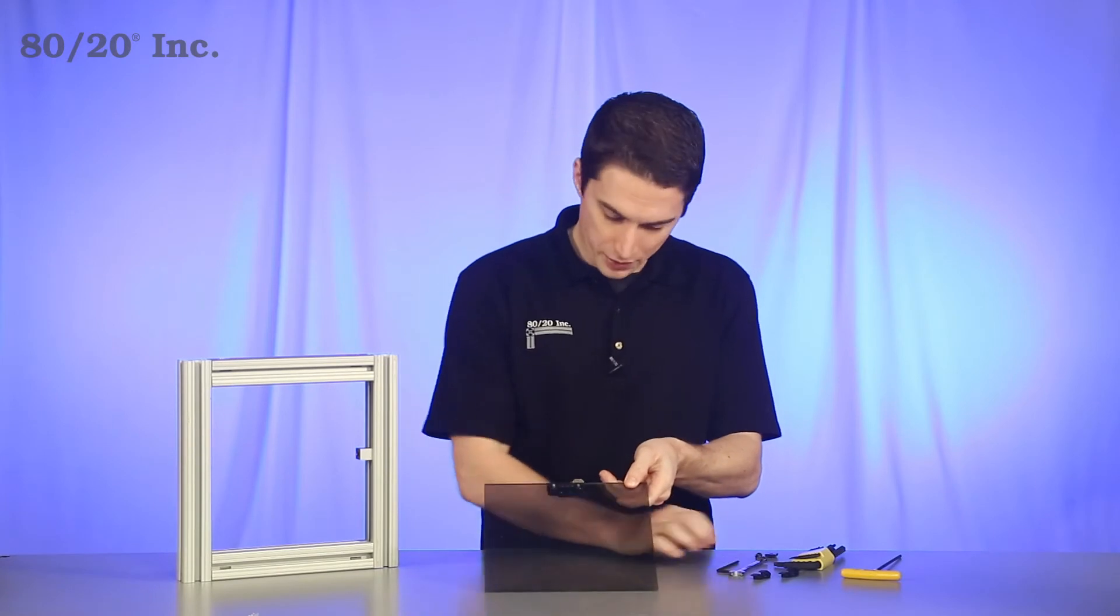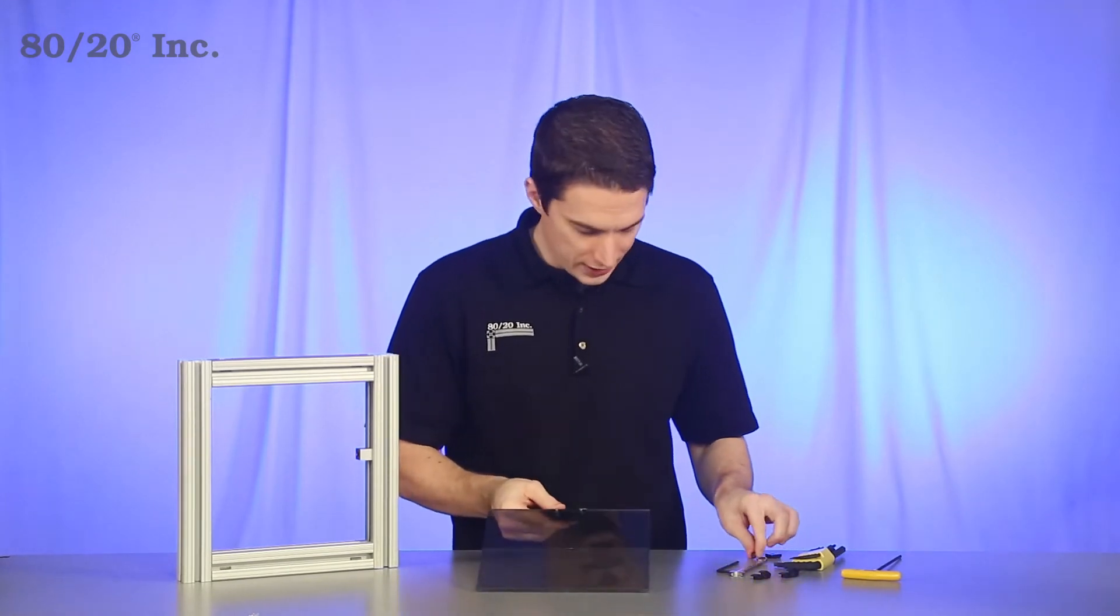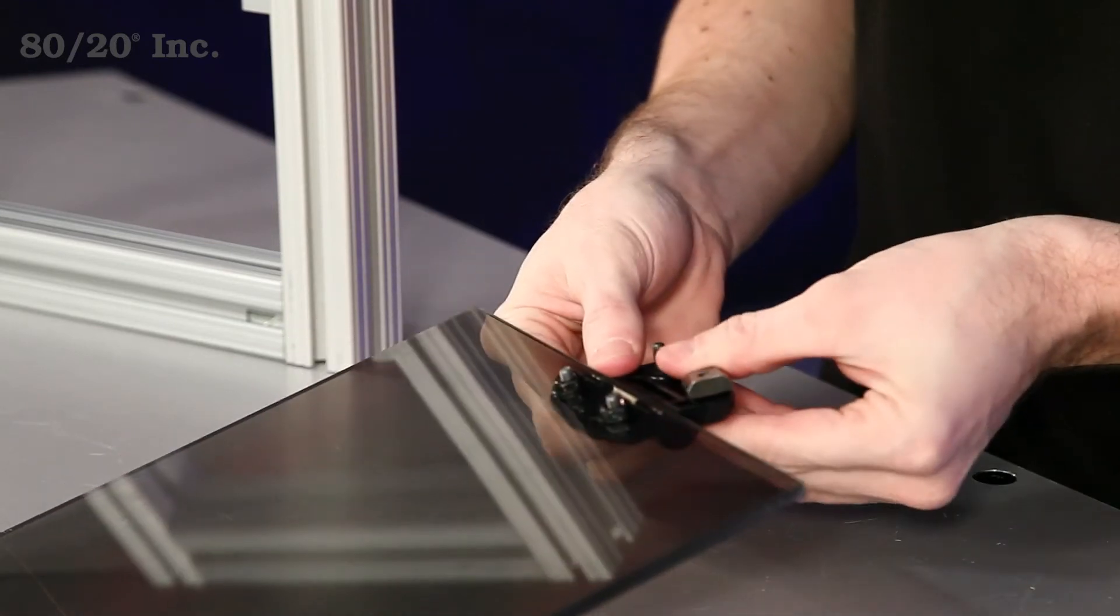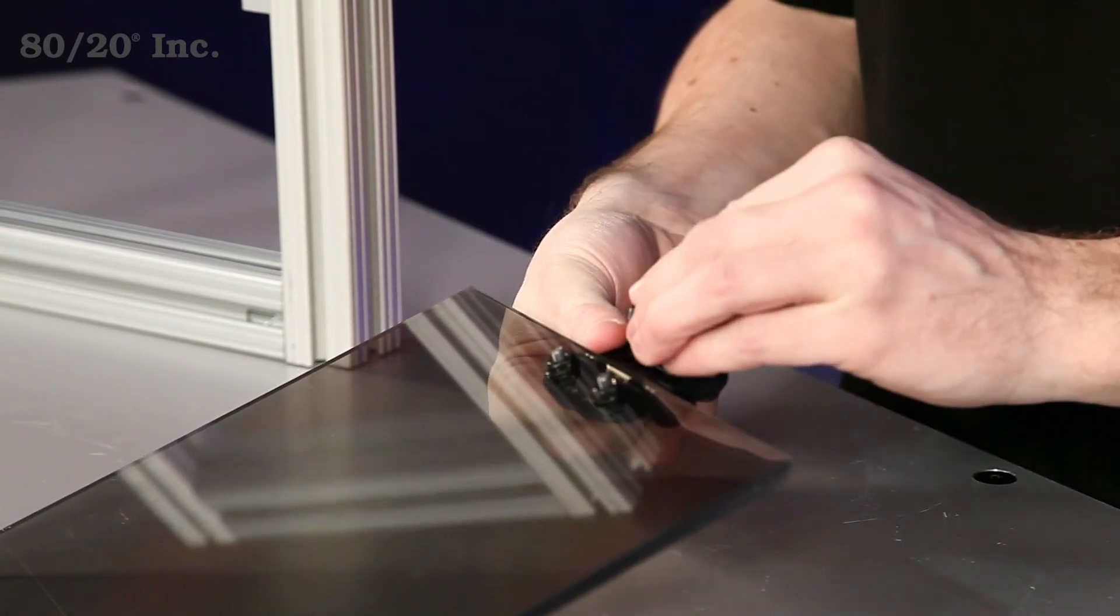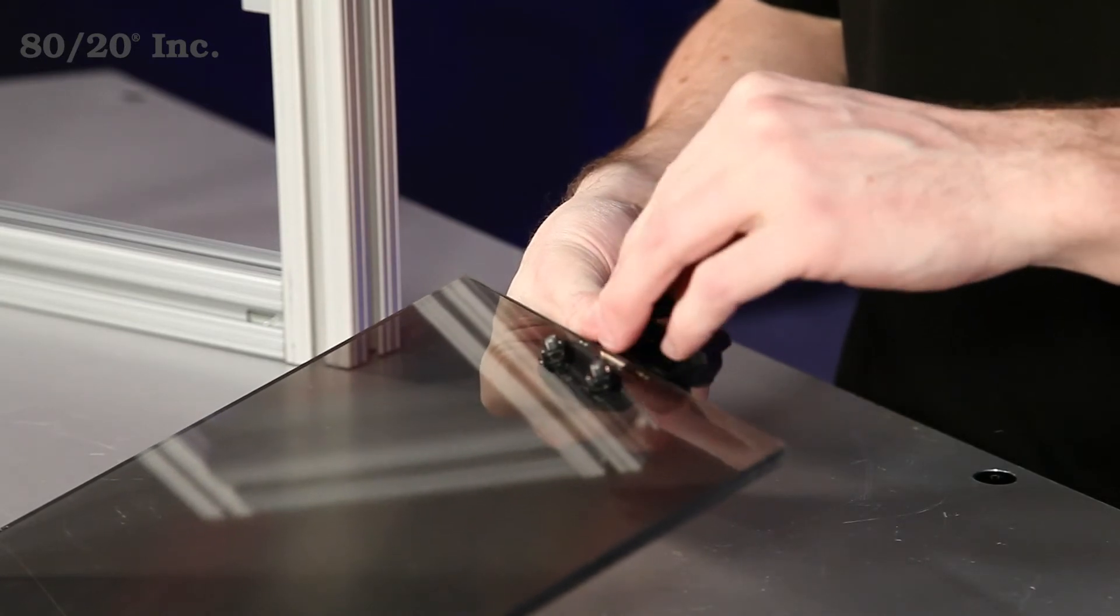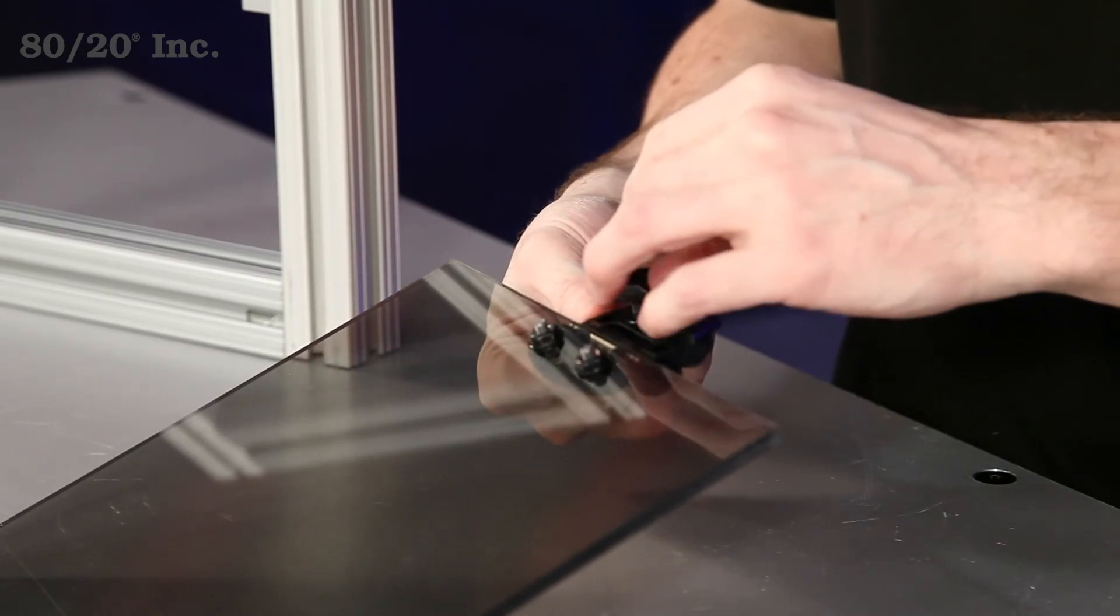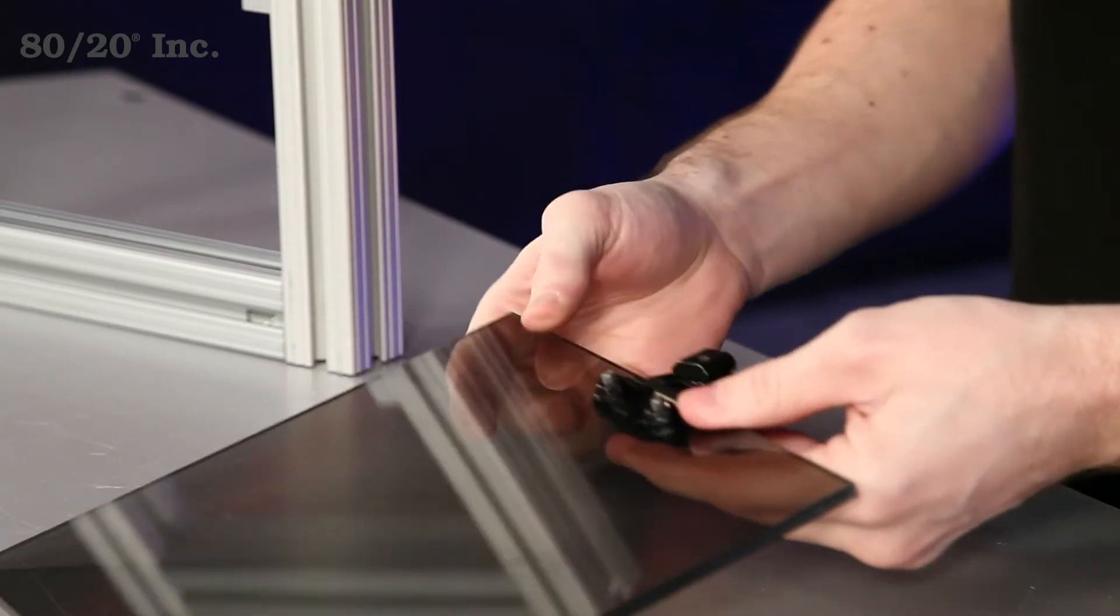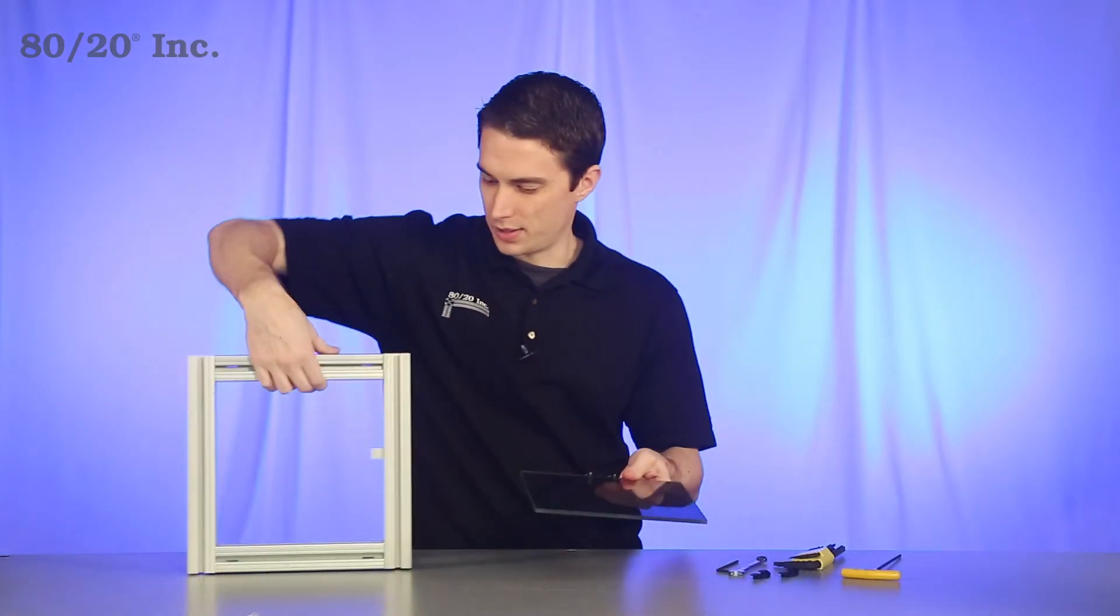Now once we're done with that side, we're going to preload the T-slot side with one more bolt and one more T-nut. Now once we have that done, we're ready to put it on our frame.